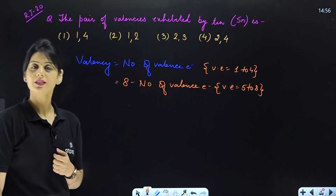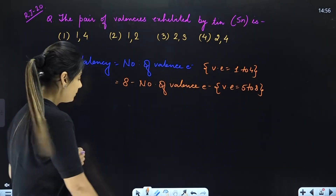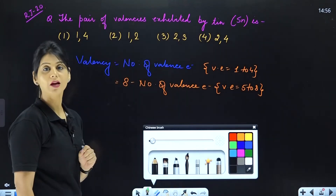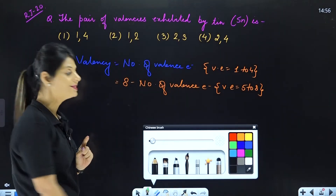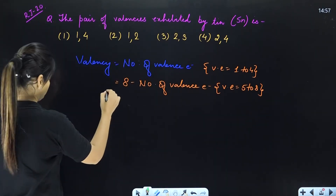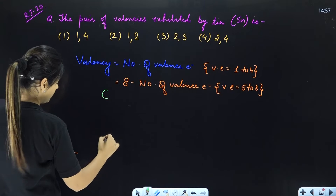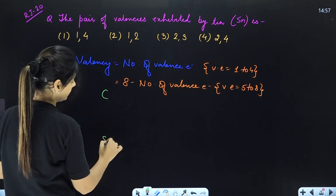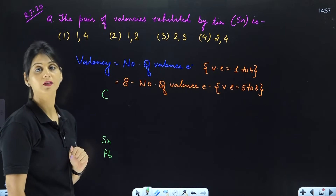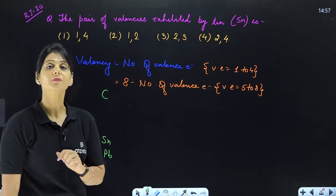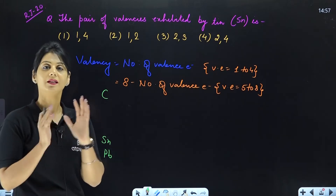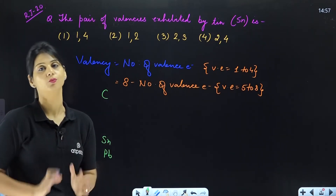Now let's add the concept of Tin. Tin belongs to the carbon family, that is group number 14. If you go down from carbon in the periodic table — and I advise you to at least learn the S block and P block of the periodic table.